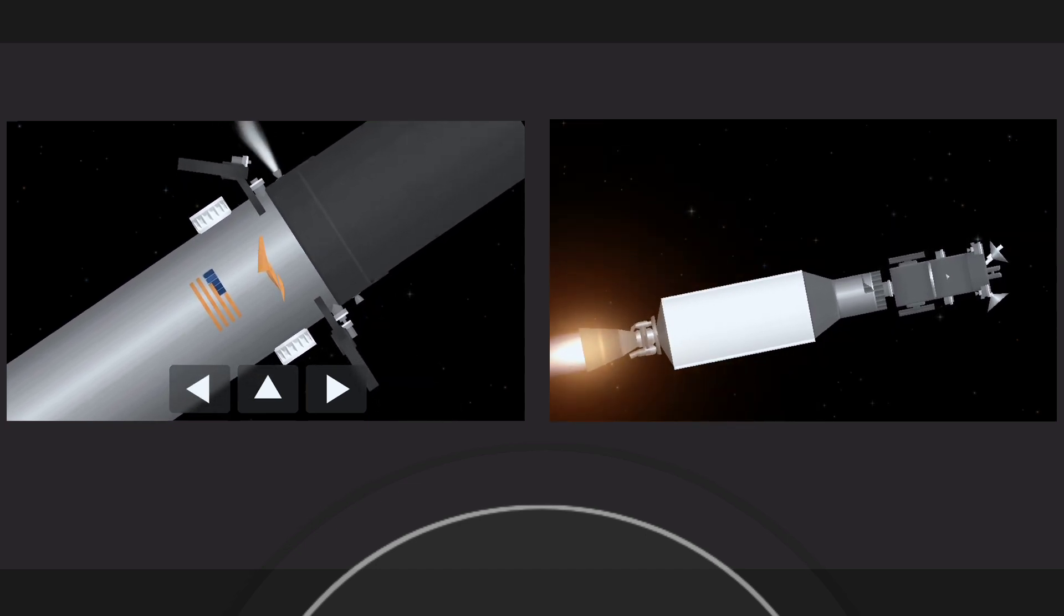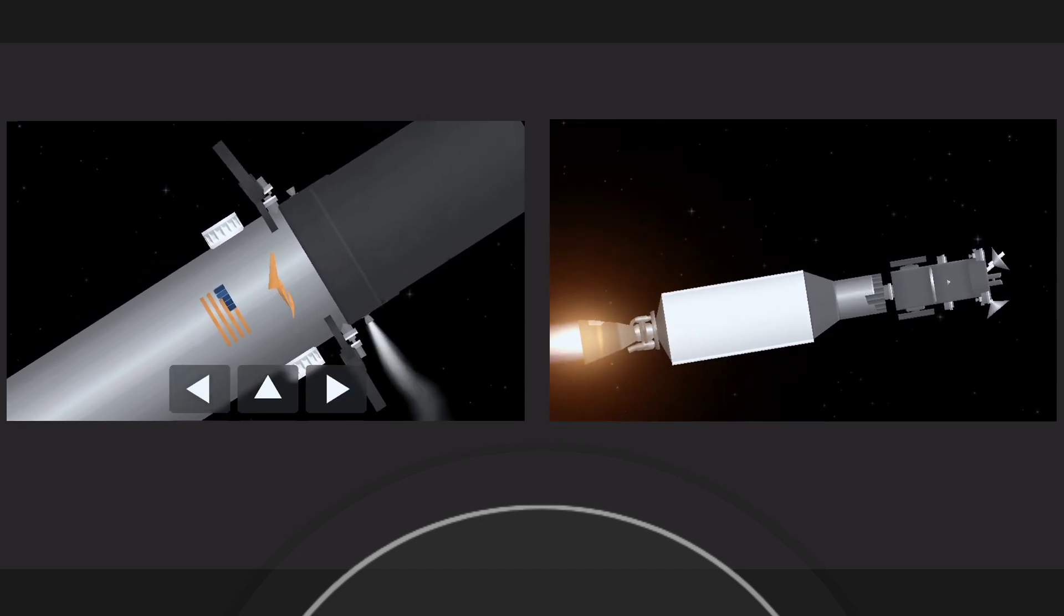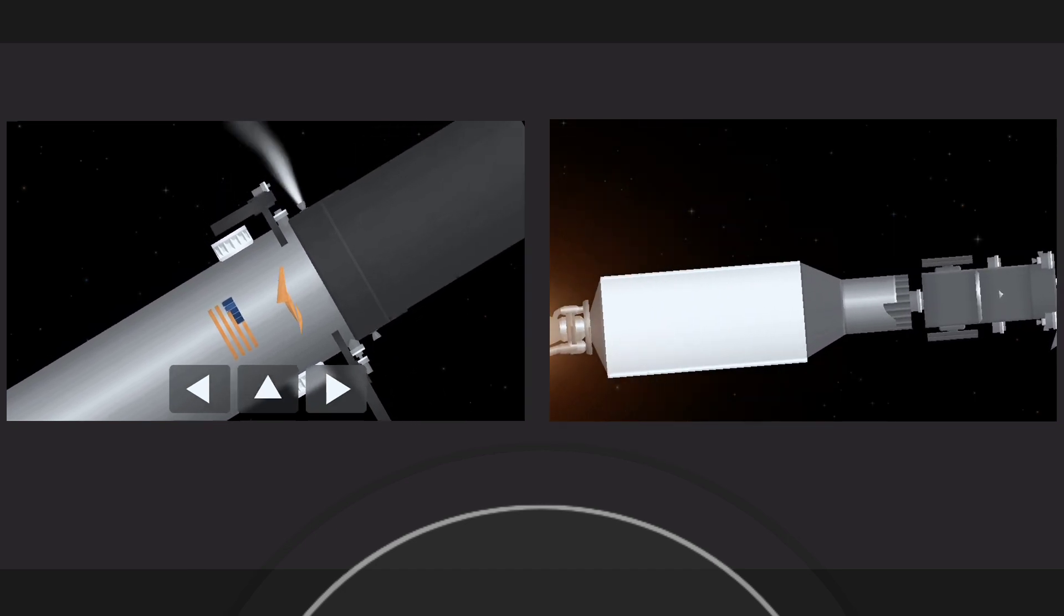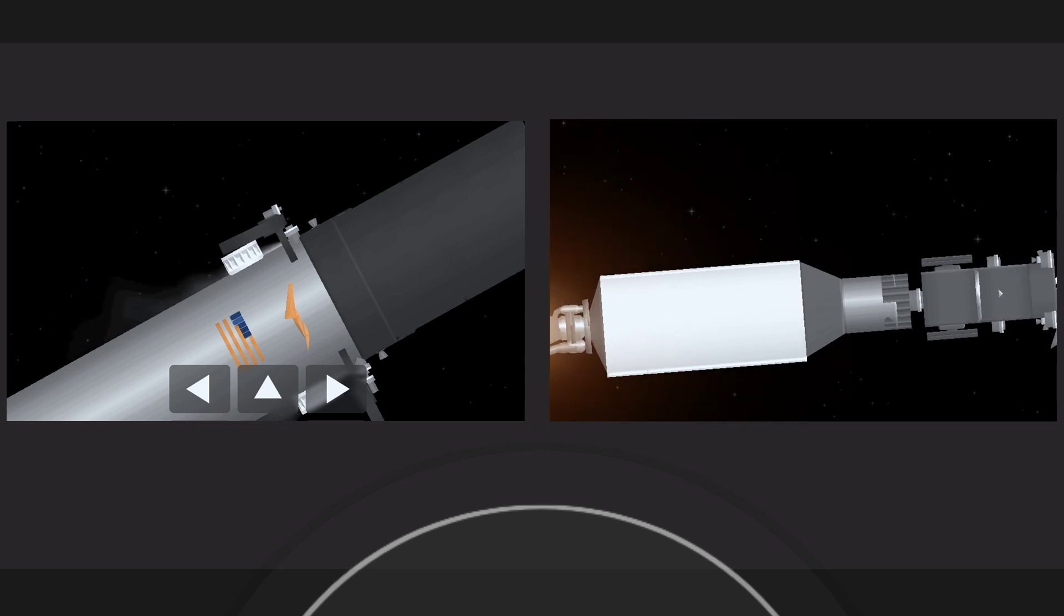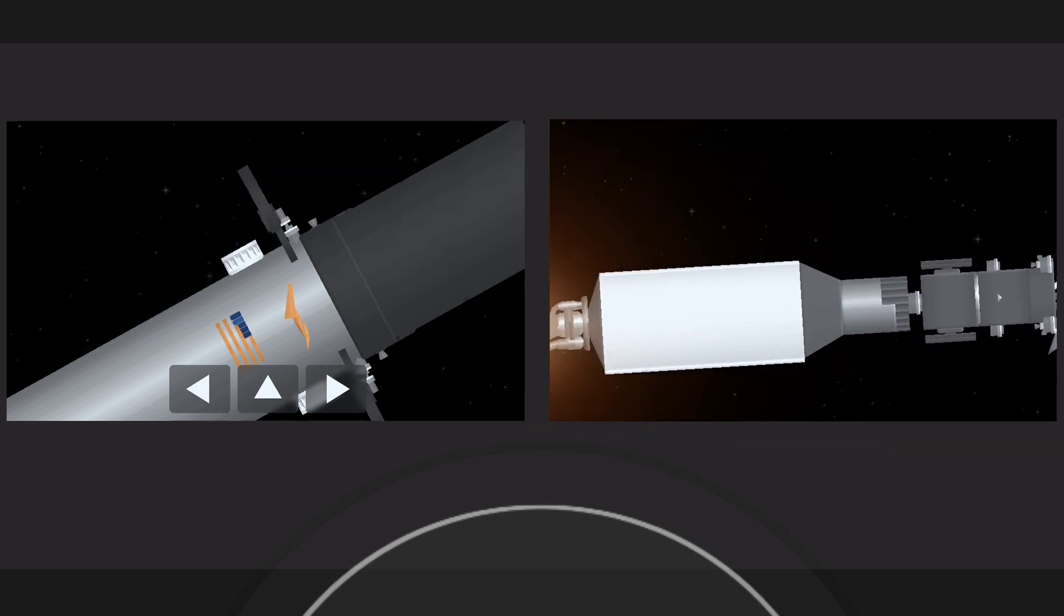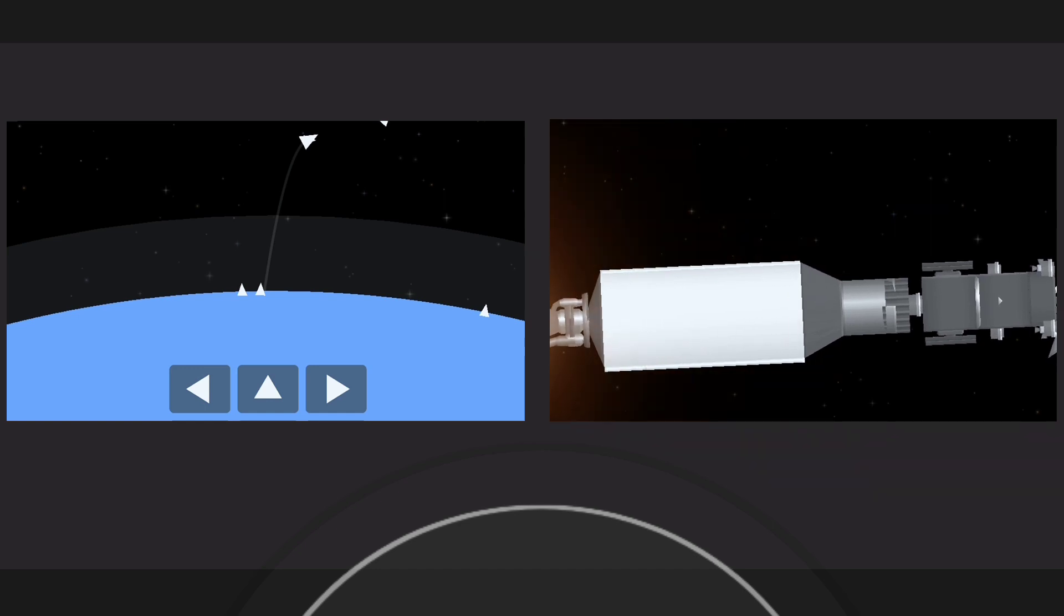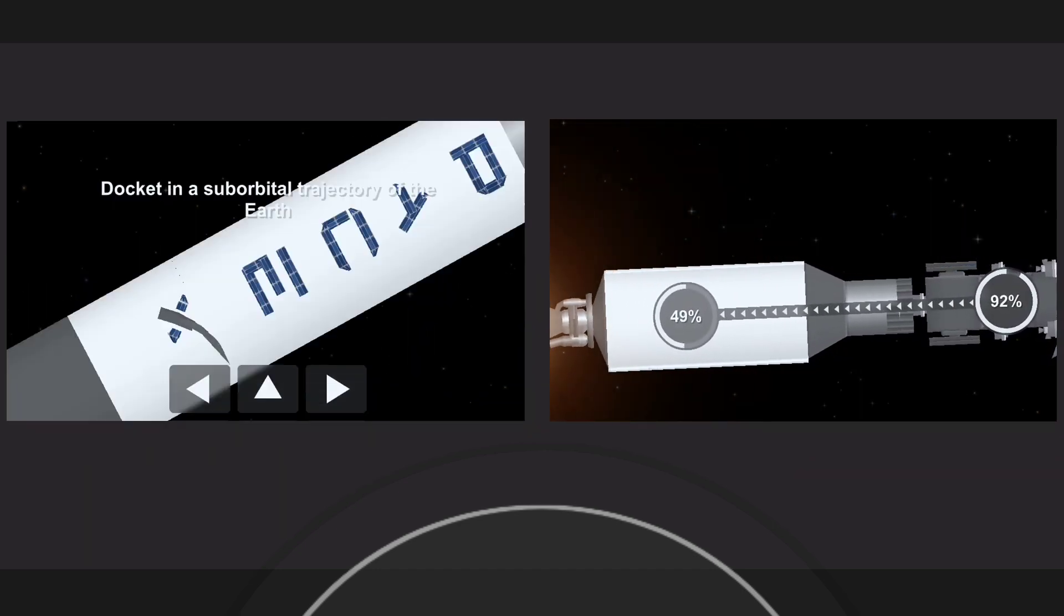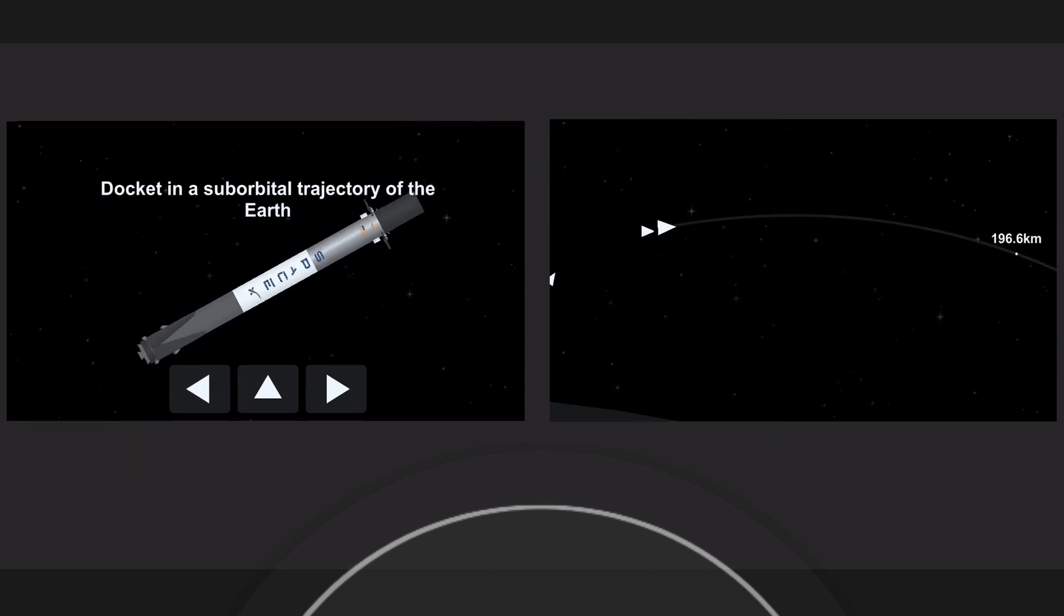We are T-plus 4 minutes and 13 seconds into flight. Everything is looking great for tonight's mission. On the right-hand side of your screen is a view of our second stage, specifically its Merlin vacuum engine. We also call it MVAC engine for short. It's currently in the first of its two planned, first and only planned MVAC burn. The first burn should last for about another four minutes.